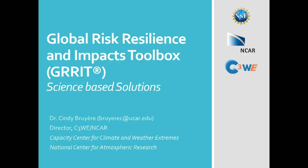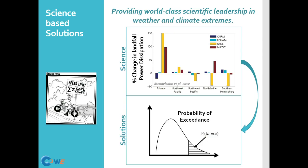What do we do at the Capacity Center? We have two missions. Our first mission is to do science — we want to be world-class leaders in weather and climate, specifically extremes. Climate is in the news a lot. We all know that the climate is changing and affecting us. But just saying that the climate is going to change and the environment is getting warmer really doesn't mean anything about how it affects us on the ground and our decisions.